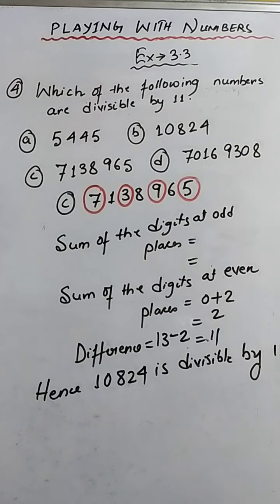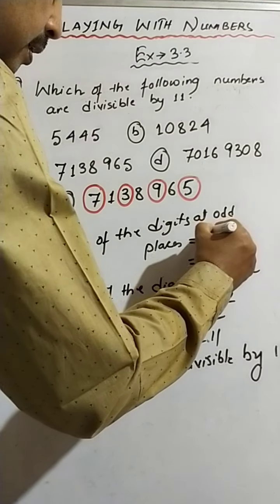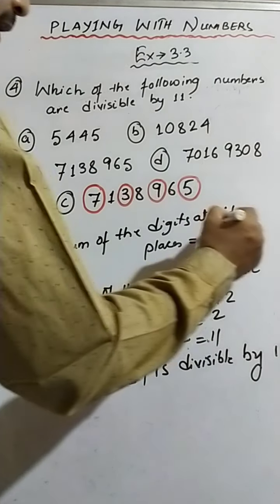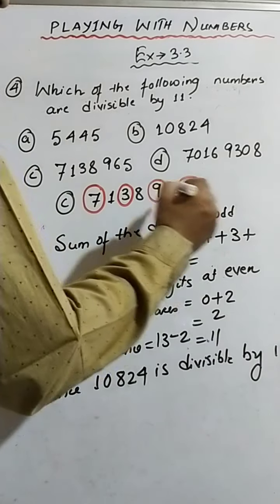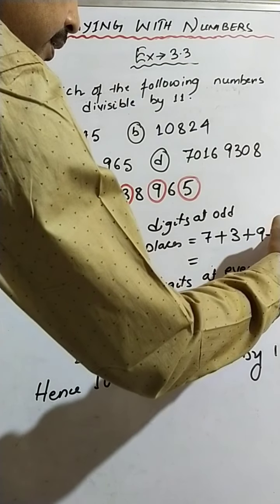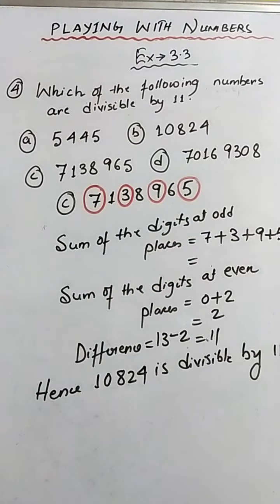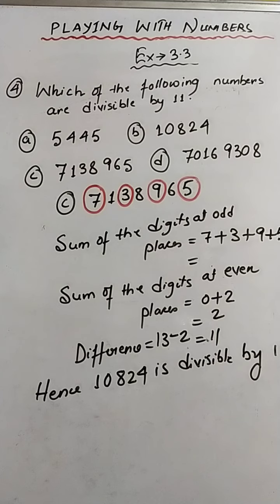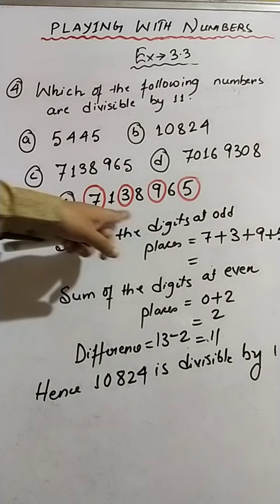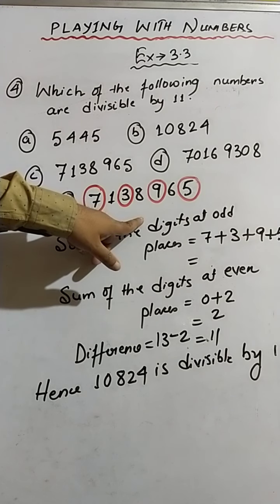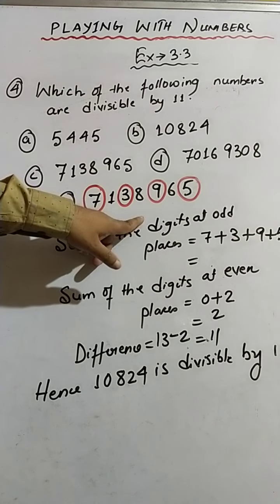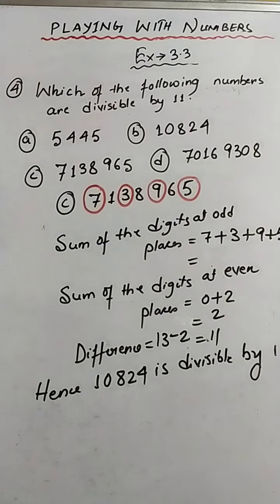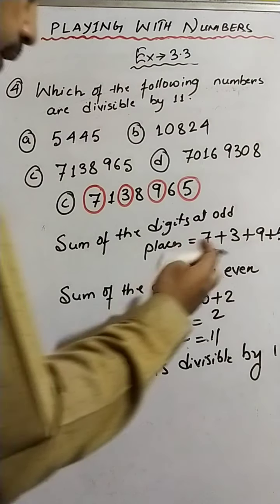So that would be 7 plus 3 plus 9 plus 5. After adding, we get 24.